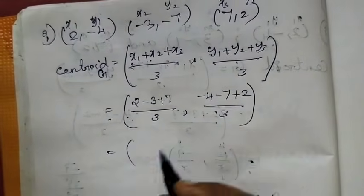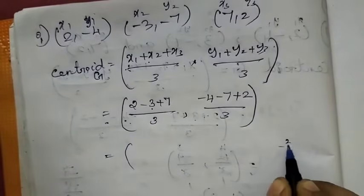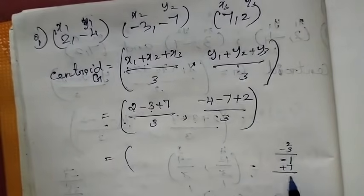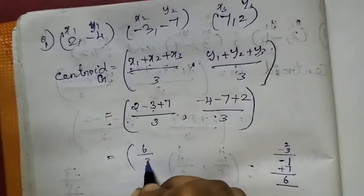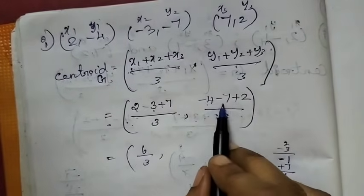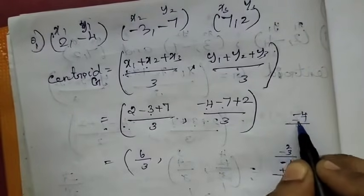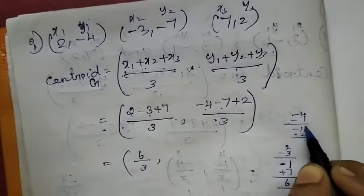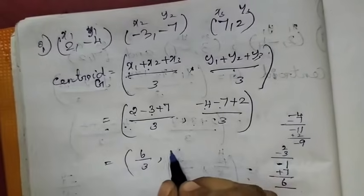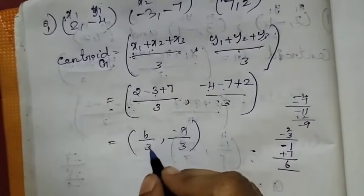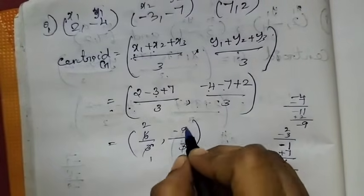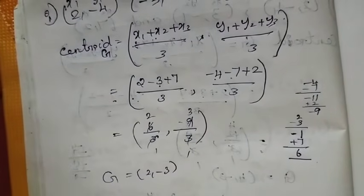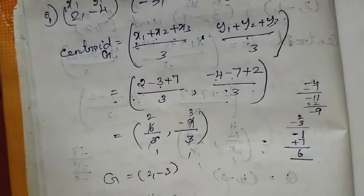Now we can do this. The calculation gives us 2, minus 3. So the answer is 2, minus 3. This is the centroid.